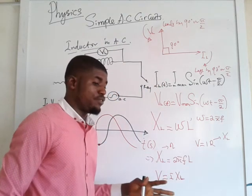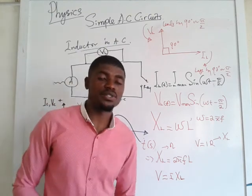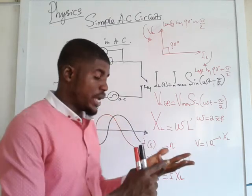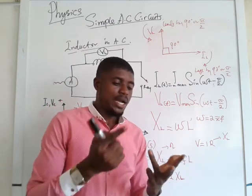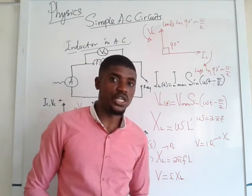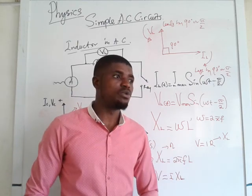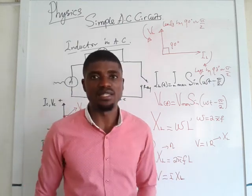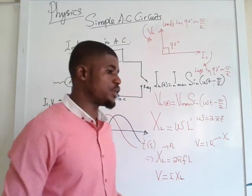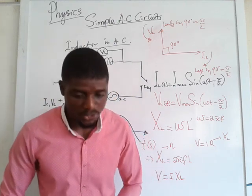Today, I believe we have come to the end of today's class. When next we meet, we shall be looking at how to introduce a resistor, a capacitor, and an inductor — all at one time or two at a time — in an AC circuit, and what is called impedance. We will also use all these equations to solve a whole lot of questions. Thank you and God bless you.